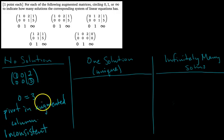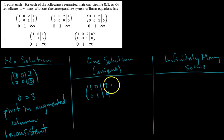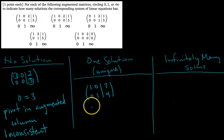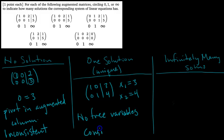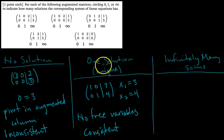The system is inconsistent if there's a pivot in the augmented column, meaning there's no solution. For one solution, we'd be looking at a matrix where every variable column has a pivot — no free variables. You can just read off the solutions: x1 equals 3, x2 equals 4. That's one unique solution. The condition is: no free variables. But the system also has to be consistent first — meaning at least one solution exists.